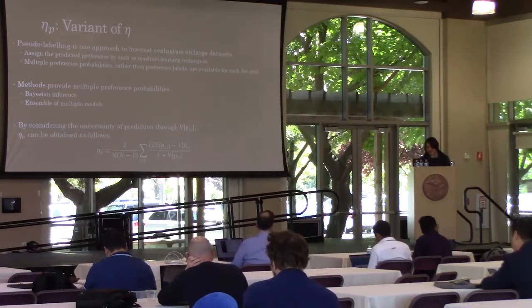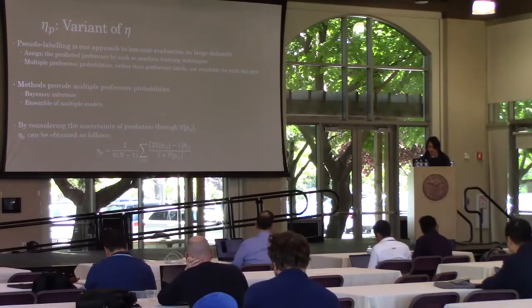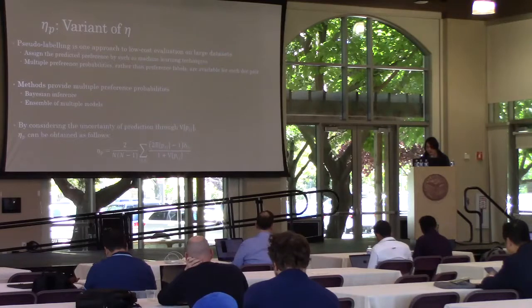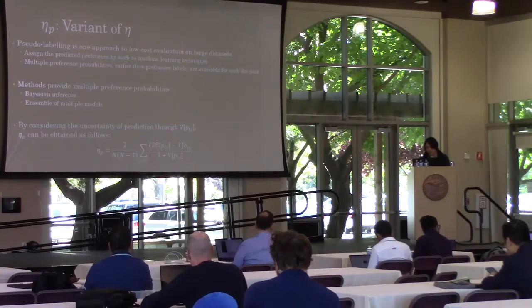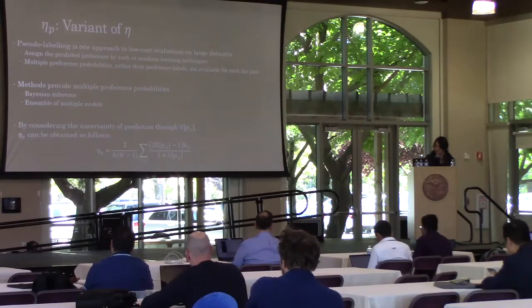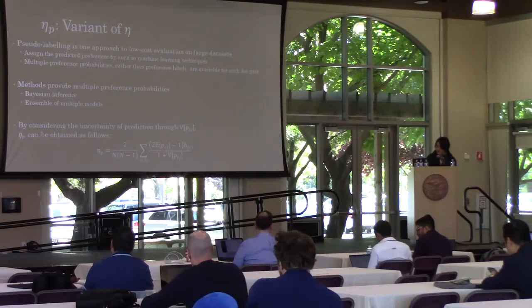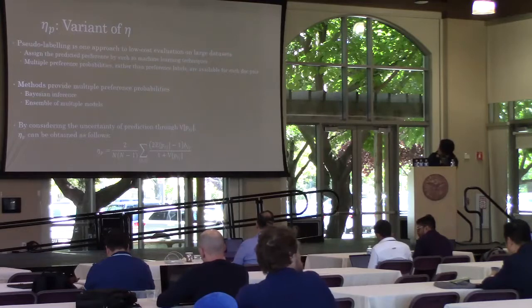Moreover, several methods of machine learning, such as Bayesian inference and ensemble of multiple models, can handle uncertainty of predictions. If we have multiple predicted probabilities, such as samples from the predicted posterior distribution, we can calculate the expectation and variance of them. By considering the uncertainty of predictions through the variance of probabilities, our proposal measure, eta-P, can be obtained like this.